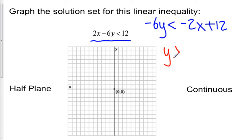So negative 2 over negative 6. That would be 1/3 x. And 12 divided by negative 6 would give me negative 2.